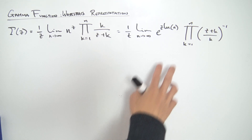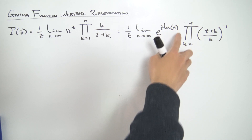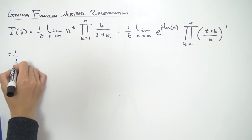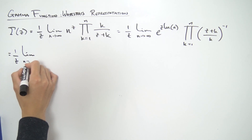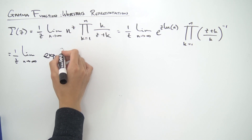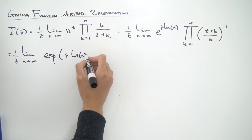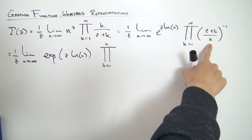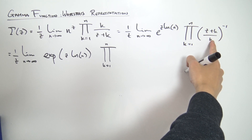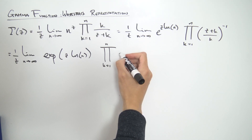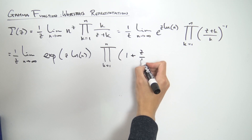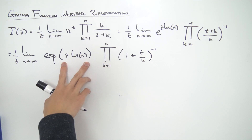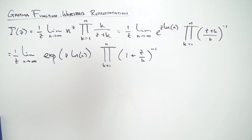Let's keep going. I'm going to replace the e to the something notation with the exp notation — it just makes things a little bit easier to write out later. So we have 1 over z, limit as n approaches infinity of exp(z times natural log of n), and then the product still as k goes from 1 to n. We can split the fraction: k over k is exactly 1 and we still have plus z over k, so we have (1 plus z over k) to the minus one.